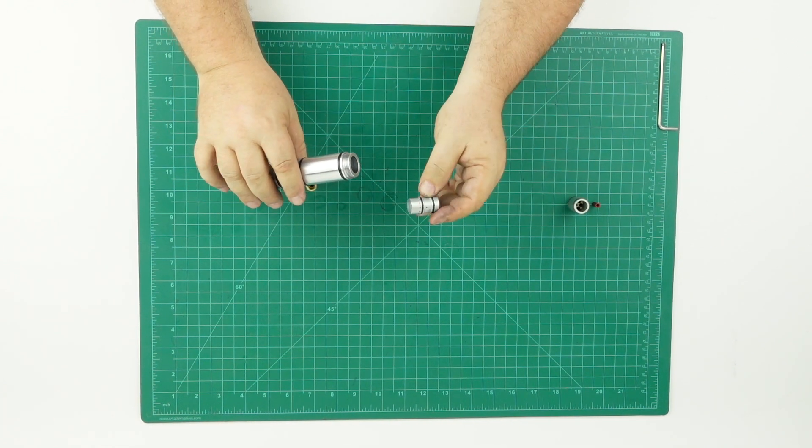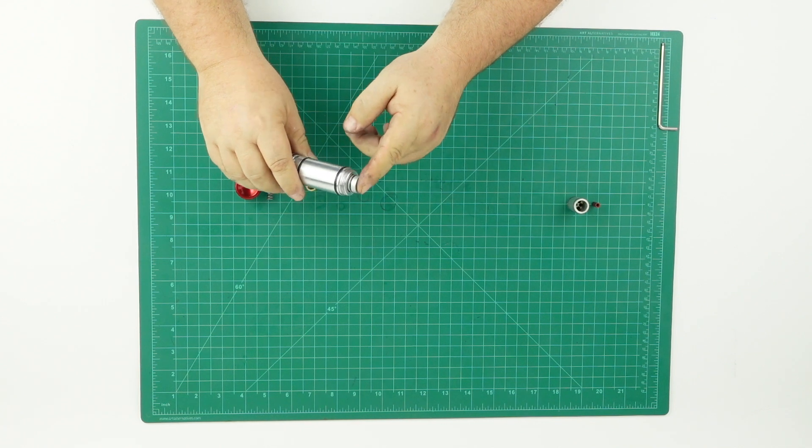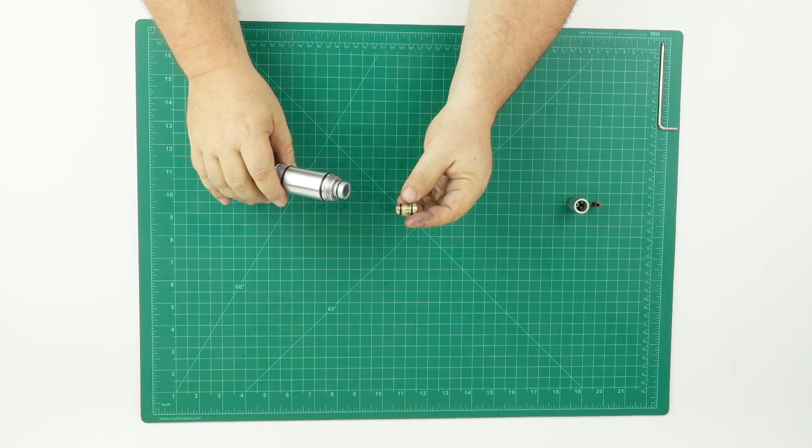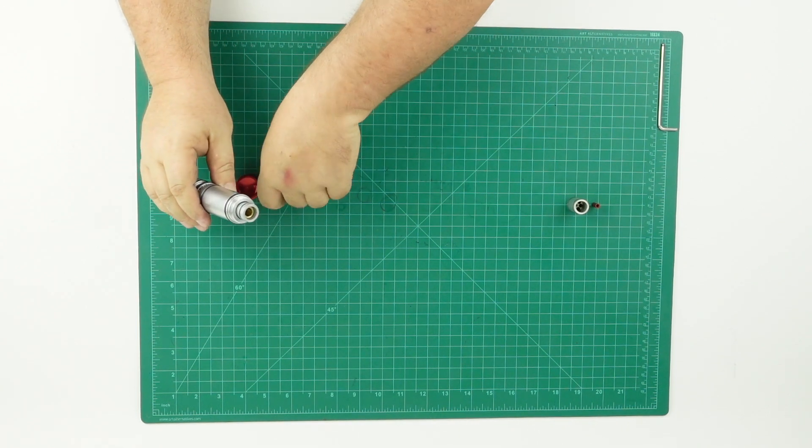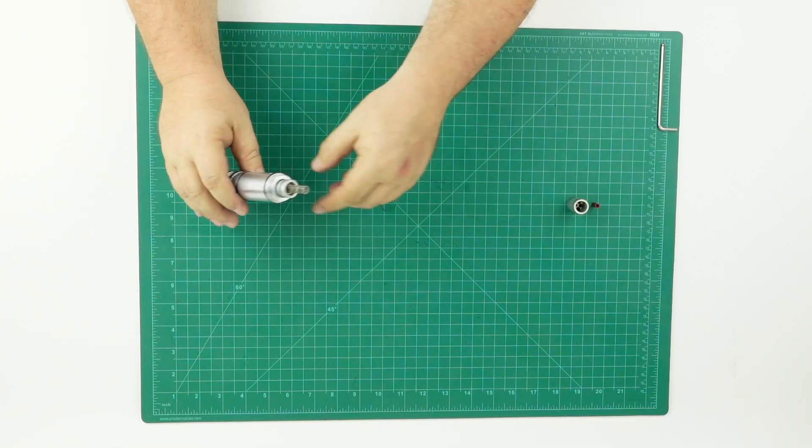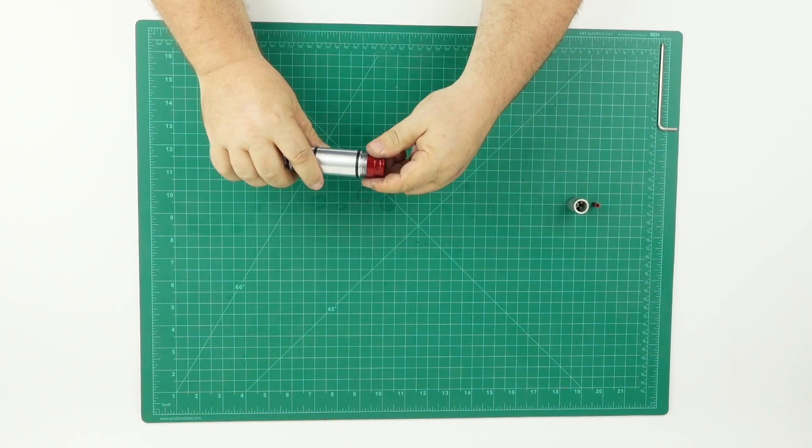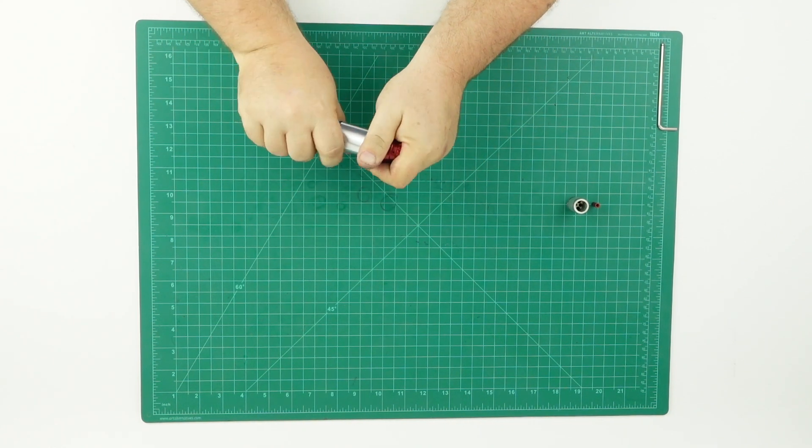Next thing, you have the timing housing. It goes in right behind it. Then we have the timing spool. Make sure both of these stay lubricated. They both have to be able to move. Timing spring. And finally, your color-matched back cap.